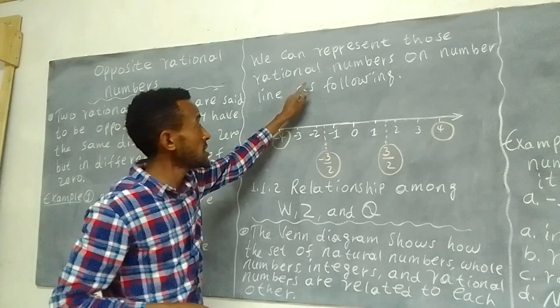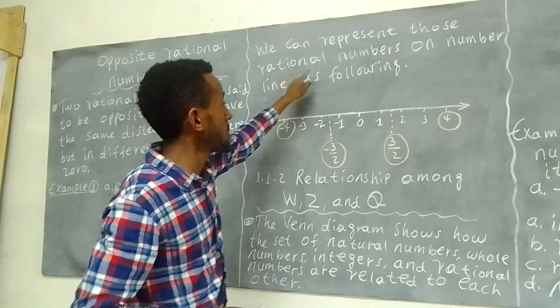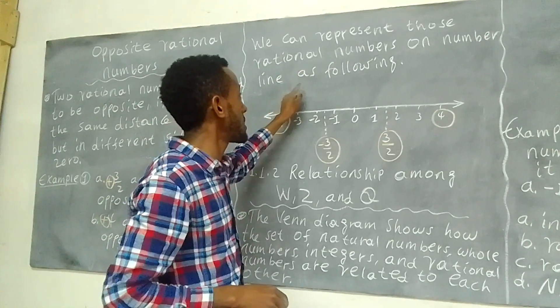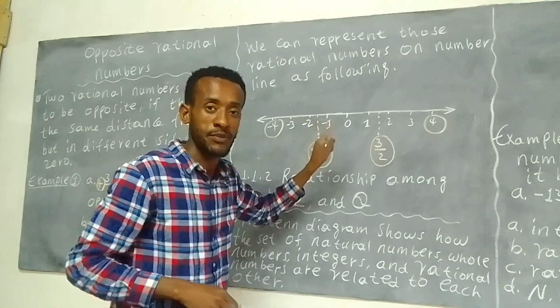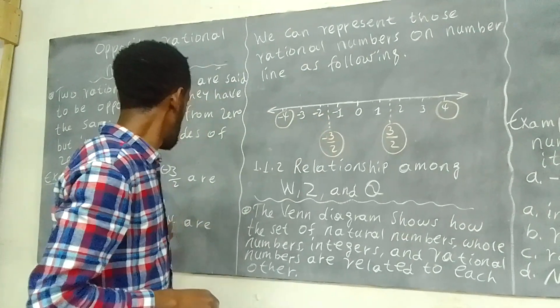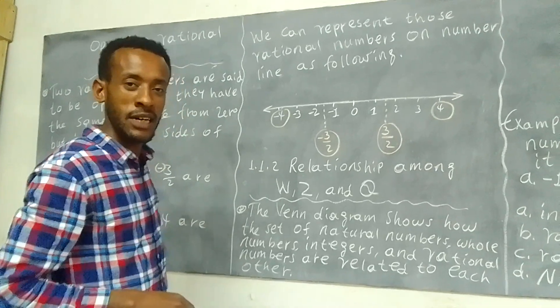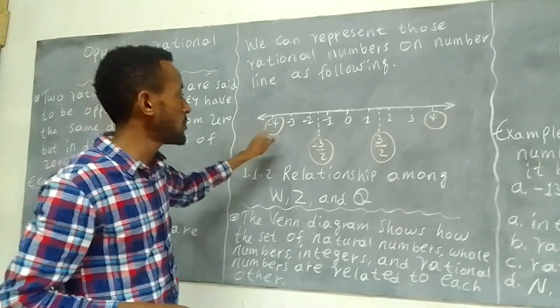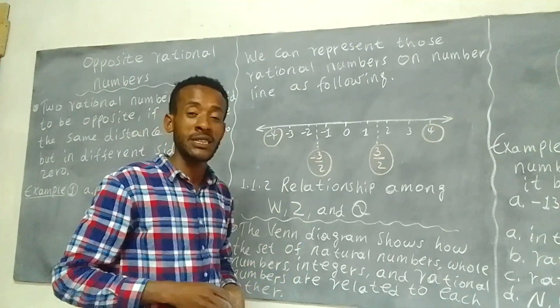We can represent those rational numbers on a number line as following. This one is equal to the number line.